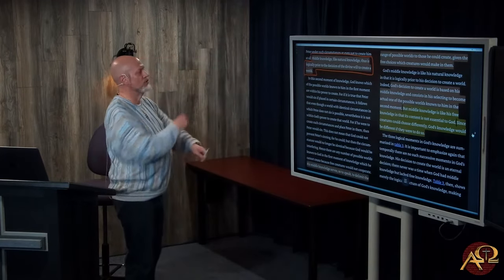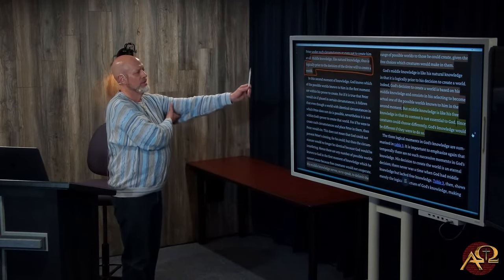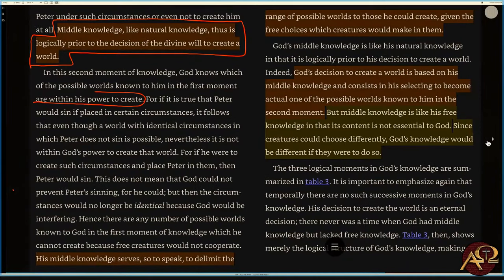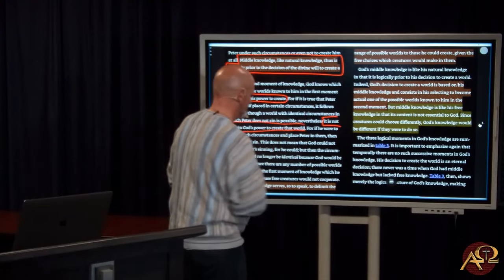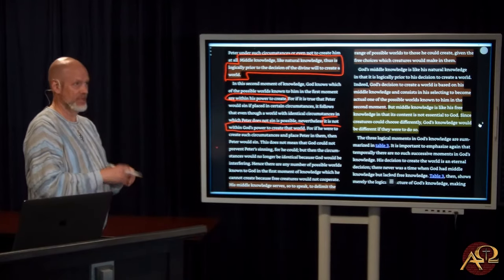In the second moment of knowledge, God knows which of the possible worlds known to him in the first moment are within his power to create. For if it is true that Peter would sin if placed in certain circumstances, it follows that even though a world with identical circumstances in which Peter does not sin is possible, nevertheless it is not within God's power to create that world. Do we see this? Are we hearing this?